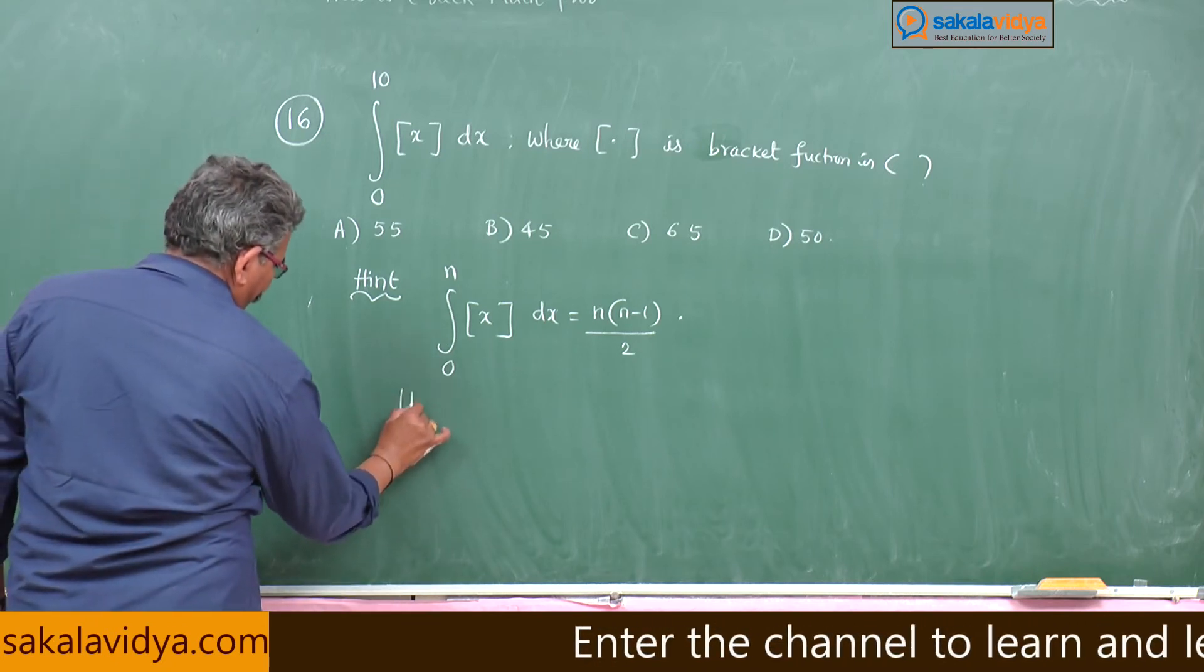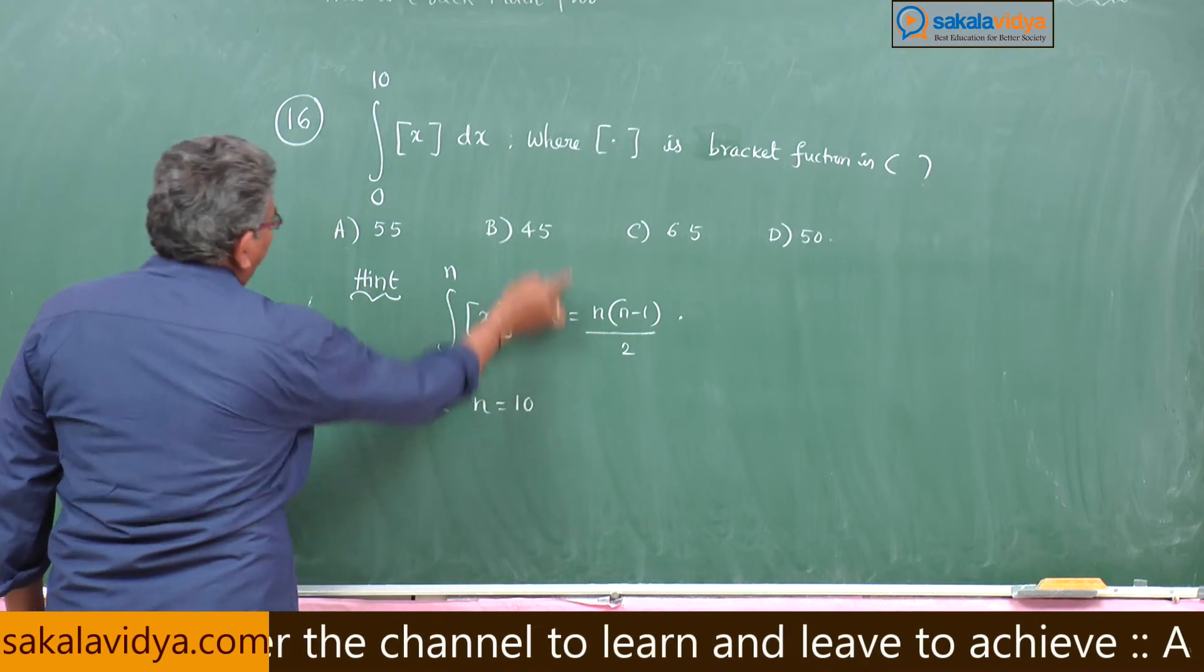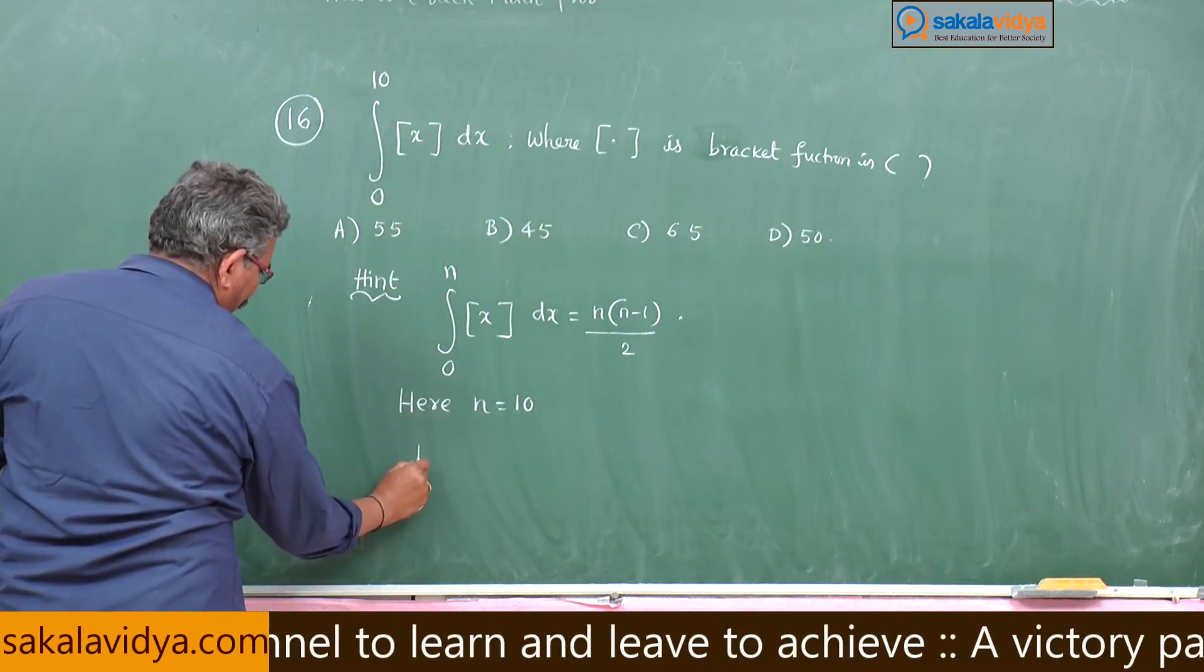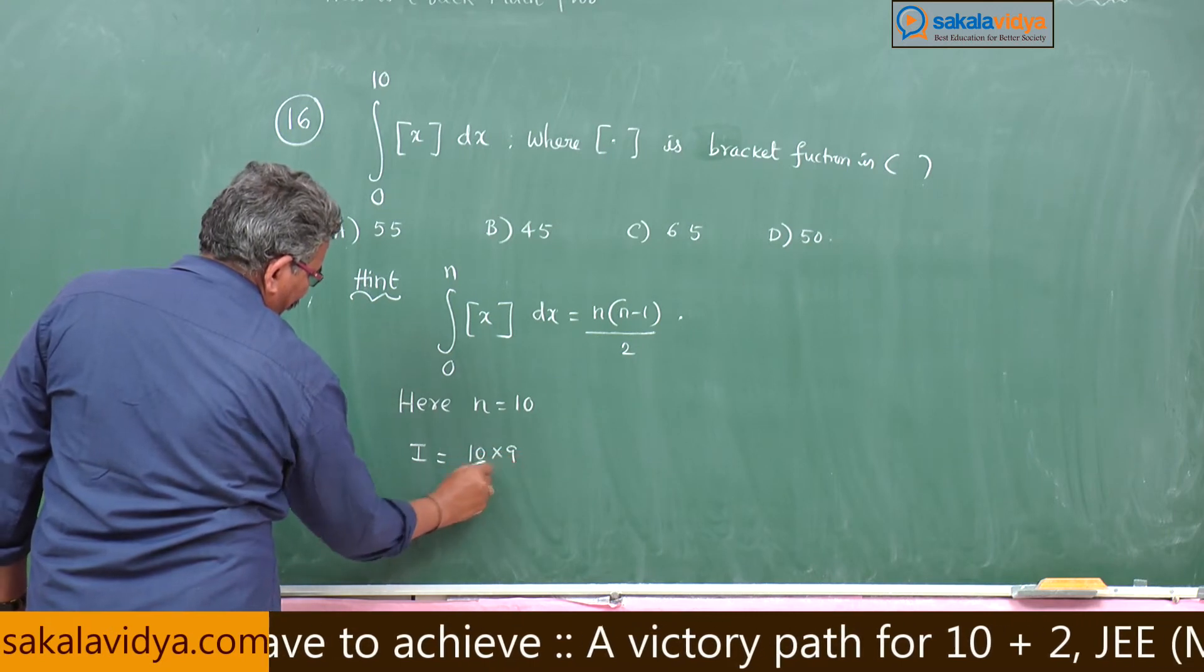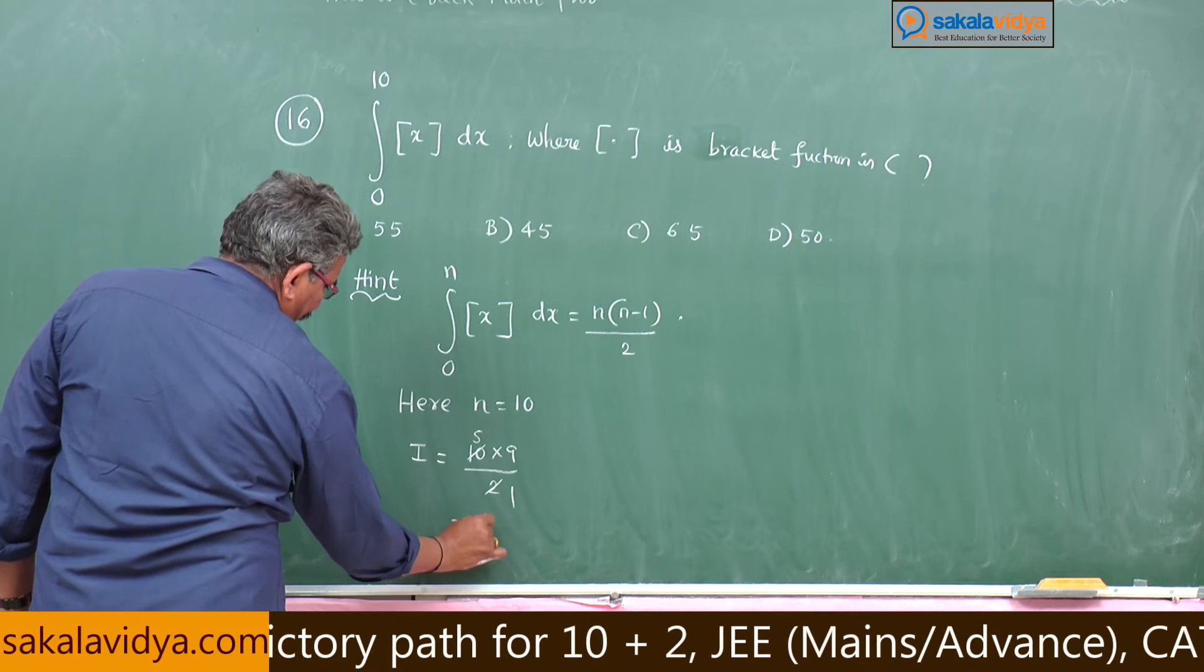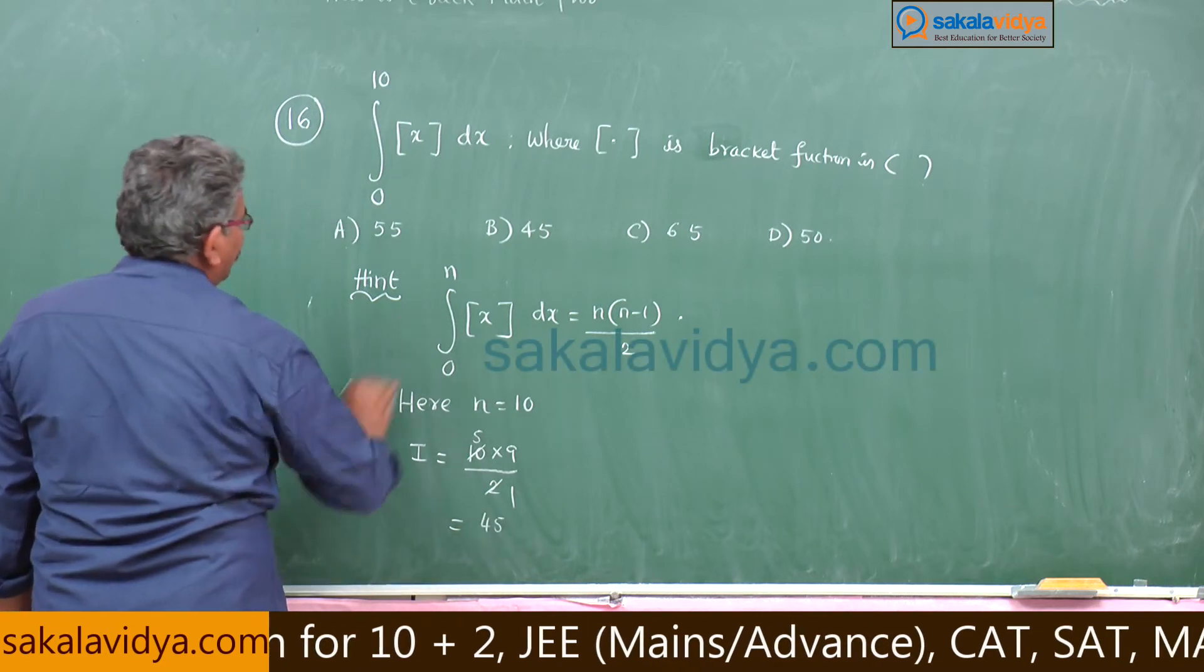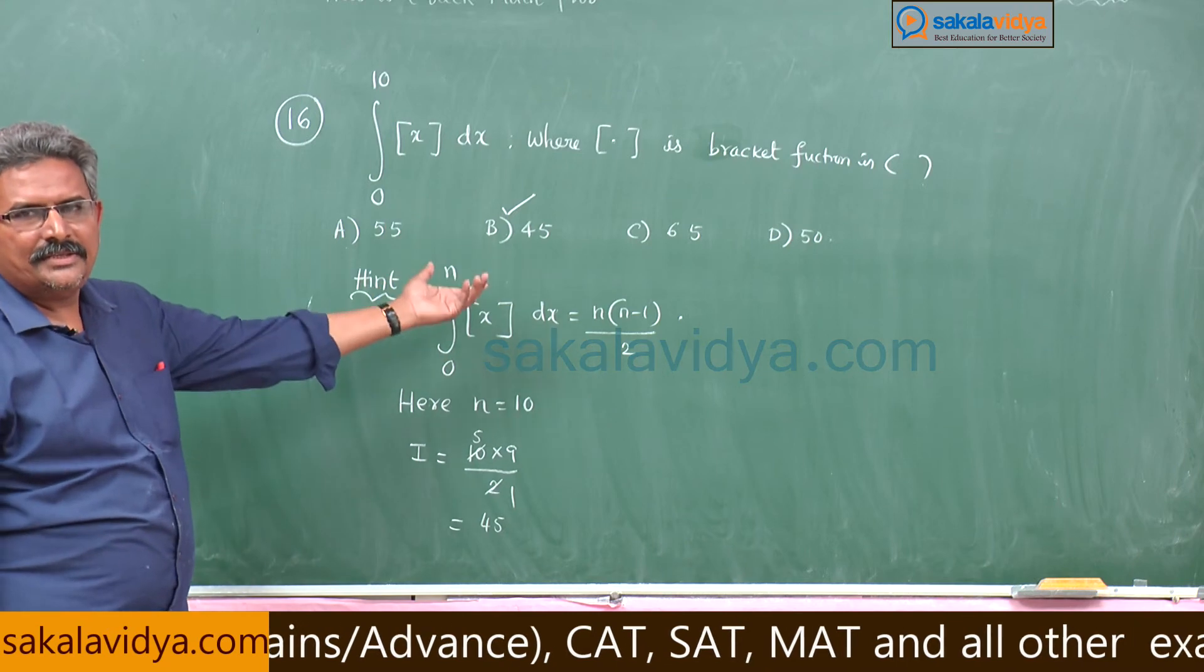Here n stands for 10. Our integral value becomes 10 times 9 divided by 2, which equals 45. Option B is the right answer.